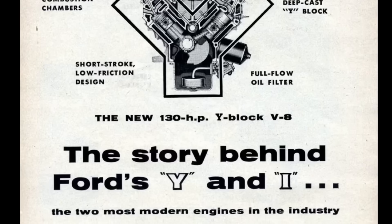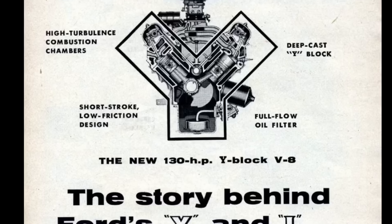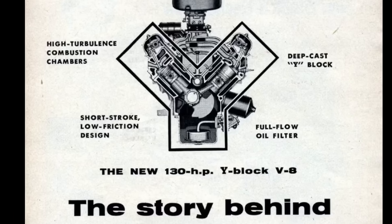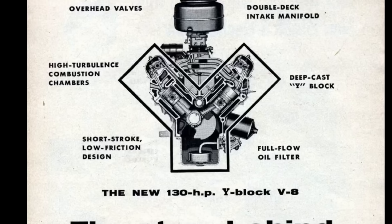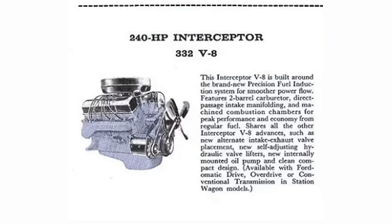The year is 1958. Ford already has a V8 called the Y-Block, which was introduced just four years prior in 1954. But Ford knows that engine has top-end oiling issues. Not only that, but the Y-Block could only get so big. Ford wanted to offer a better engine design with the ability to go larger. Enter the Ford FE engine.